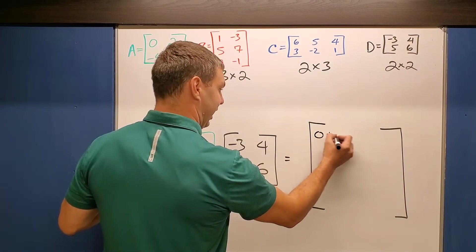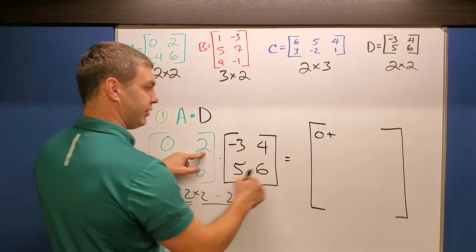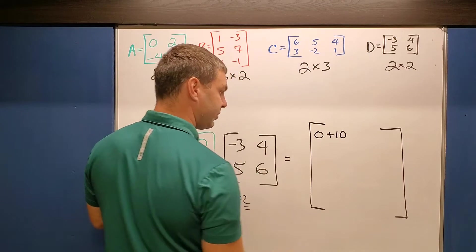And then we're going to add that to the next ones, 2 times 5, 2 times 5 here is 10. So eventually our first element in there is going to be 10.